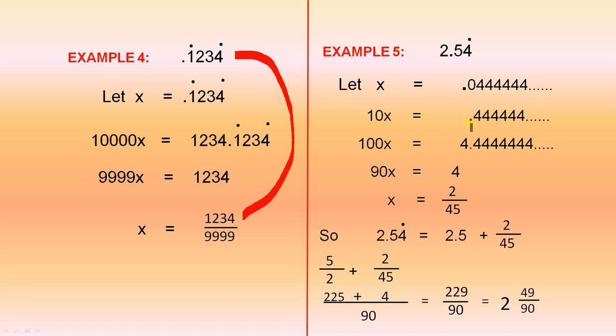So let x equal 0.04 recurring. Therefore 10x equals 0.44444, repeated. Therefore 100x equals 4.44444, repeating. 100x minus 10x is 90x. This number minus that number gives us 4. So 90x equals 4, so x equals 4 over 90, which is actually 2 over 45. So I've just simplified it straight away. So it's 2 over 45.